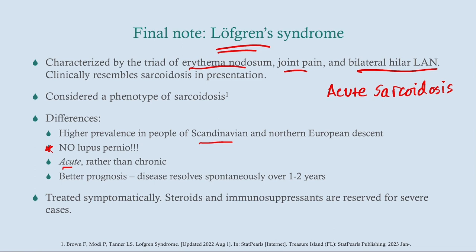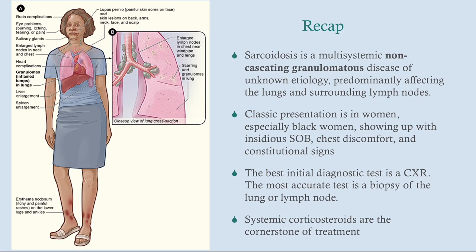In summary, sarcoidosis is a multisystemic, non-caseating granulomatous disease of unknown etiology, primarily affecting the lungs and hilar lymph nodes with bilateral hilar lymphadenopathy on chest x-ray. The classic presentation is in young Black women with insidious onset of shortness of breath, chest discomfort, constitutional signs, and cutaneous findings like lupus pernio and erythema nodosum. Best initial test is a chest x-ray; most accurate test is biopsy of the lung or lymph node. Mainstay of treatment is systemic corticosteroids.